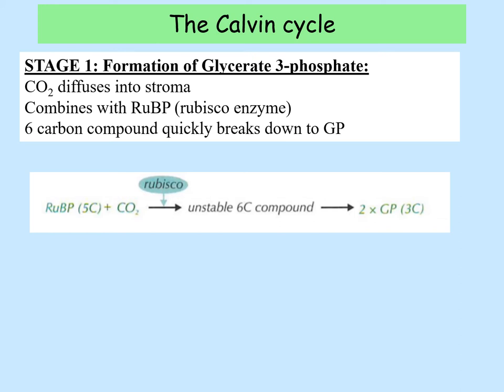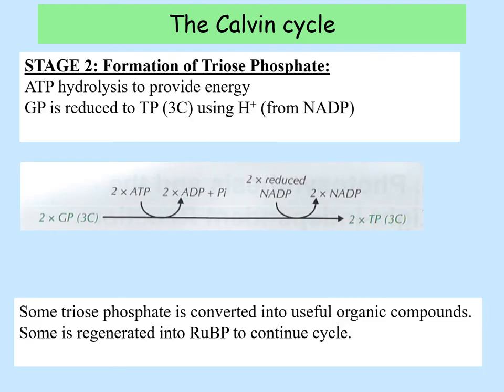If you split this into three stages: stage one is the formation of glycerate-3-phosphate. Carbon dioxide diffuses in through the stomata of the leaf into the chloroplast and through the stroma. That combines with the compound RuBP using the enzyme RuBisCO, which makes an unstable six carbon compound that forms two molecules of glycerate-3-phosphate.